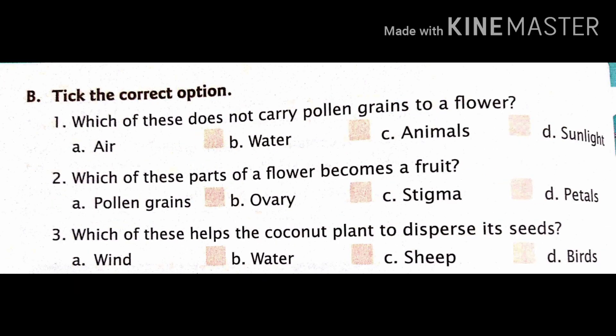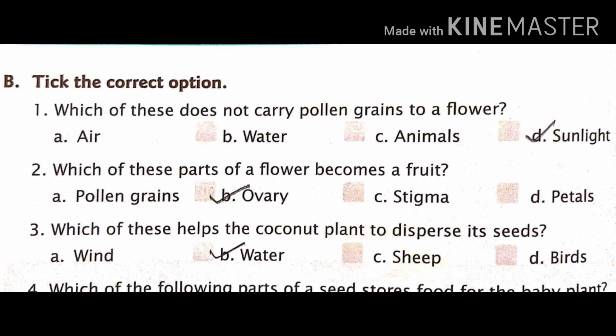Second, which of these parts of a flower becomes a fruit? Pollen grains, ovary, stigma, petals, and the right answer is ovary.